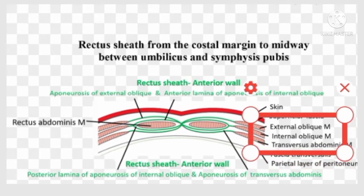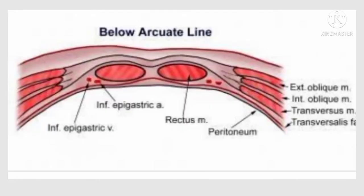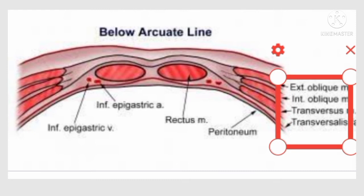As you can see in the figure, this is the external oblique muscle, internal oblique muscle, and transversus abdominis muscle. The anterior wall of the rectus sheath below the arcuate line is formed by the aponeurosis of all three flat muscles — external oblique, internal oblique, and transversus abdominis — with the aponeuroses of the internal oblique and transversus abdominis fused, while the external oblique aponeurosis remains separated. The posterior wall below the arcuate line is deficient and the rectus muscle rests on the fascia transversalis.